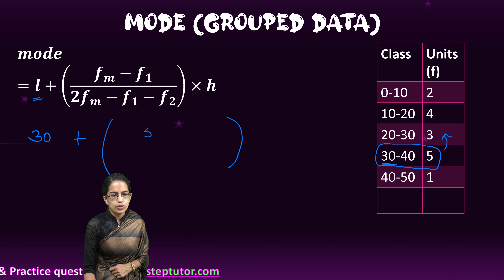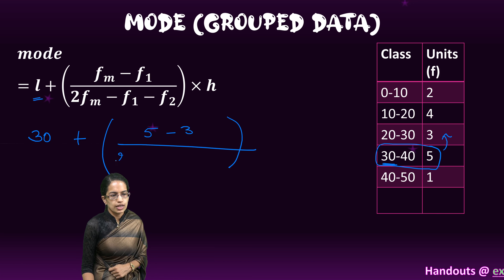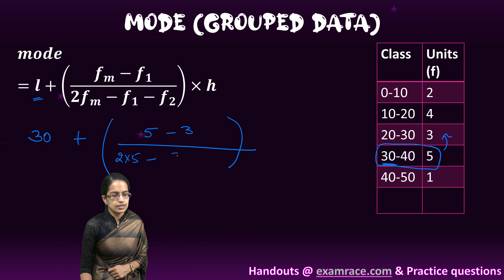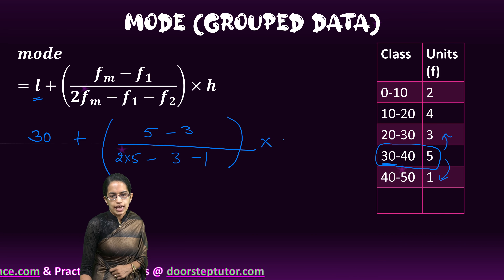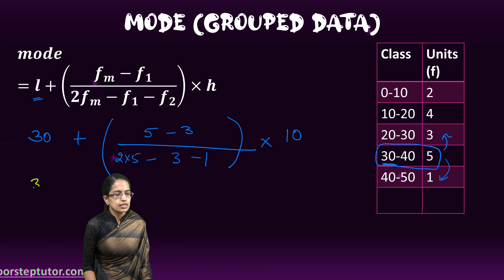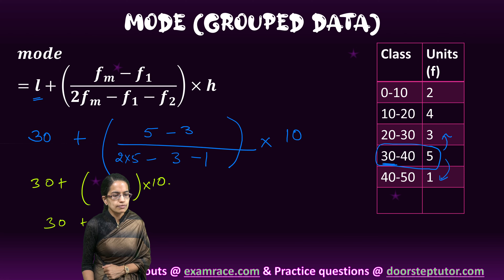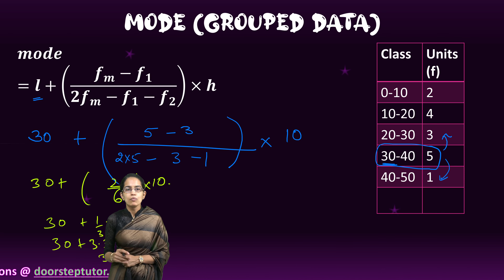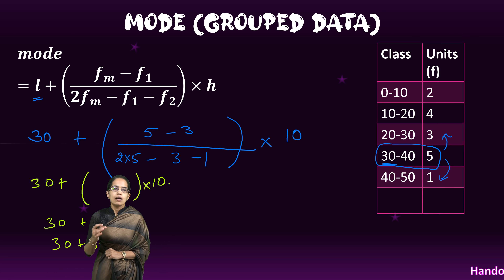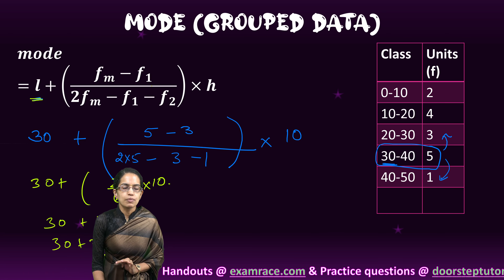The formula is: L plus the frequency of the modal class minus the frequency of the preceding class, divided by twice the frequency of the modal class minus the frequency of the preceding class minus the frequency of the following class, multiplied by h (the class interval, which is 10). So we have 30 plus 2 divided by (10 minus 4), which is 6, multiplied by 10. That gives 30 plus one-third of 10, so 30 plus 3.33, which equals 33.33 — the mode for this grouped data.